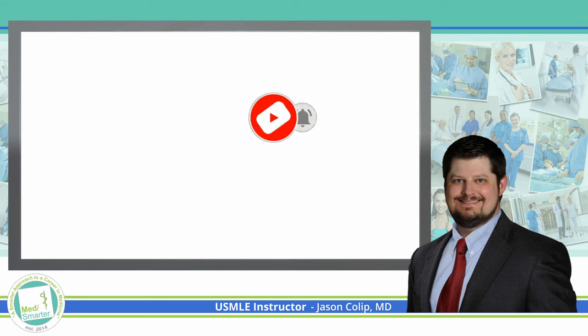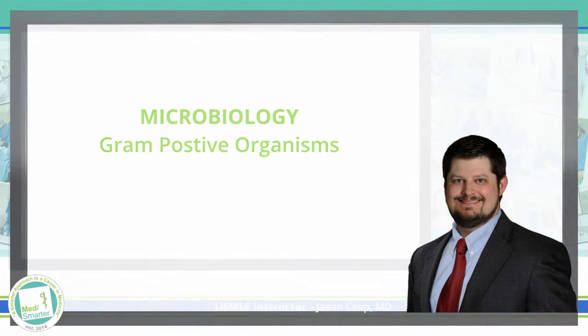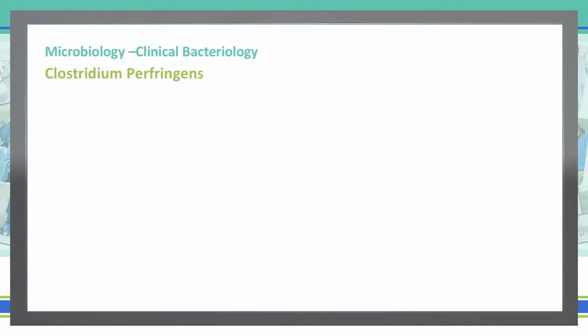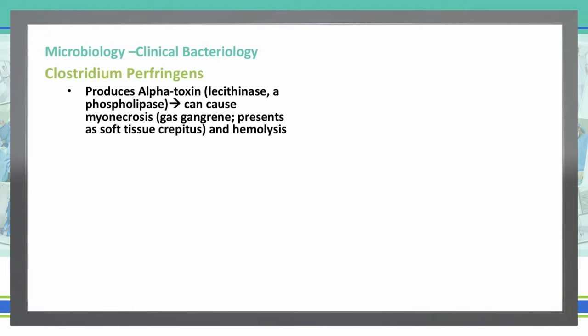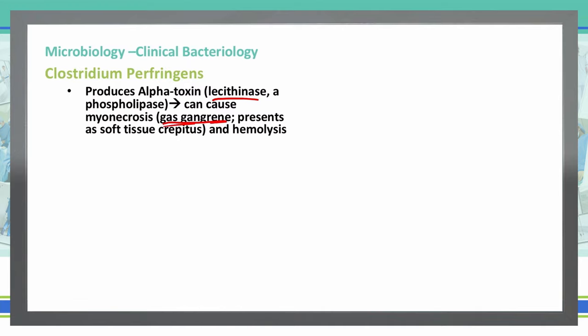Let's continue our discussion of the Clostridia bacteria with Clostridium perfringens. Clostridium perfringens produces an alpha toxin, lecithinase, which is a phospholipase, and that causes myonecrosis. This is a gas gangrene, which is important here, and it presents with soft tissue crepitus — you can actually hear gas bubbles popping in the tissue — and it also shows hemolysis.